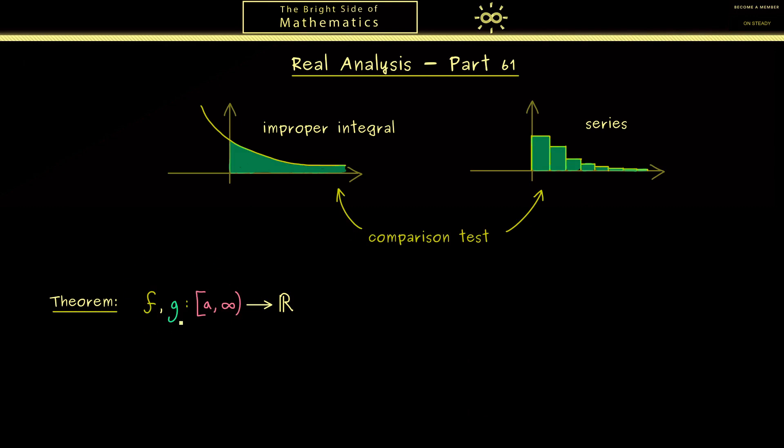Hence, this theorem you can call the comparison test for improper integrals. So what we need are two functions f and g, where f is the function we consider and g should be the majorant or minorant. Therefore, g should be a non-negative function. This means g(x) is greater than 0 for all x.